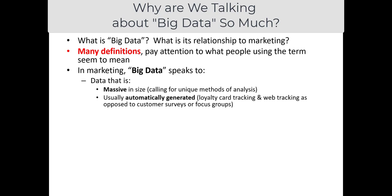Usually the type of data that is 'big data' is automatically generated — websites tracking your click behavior, loyalty card tracking, or credit card purchases. Once the system is in place, all the data being captured by those transactions happens automatically. Conversely, think of something like a focus group where a moderator interviews you and seven people have a conversation for an hour — that's another way of generating data, but it's not automatically generated, similar to a consumer survey.